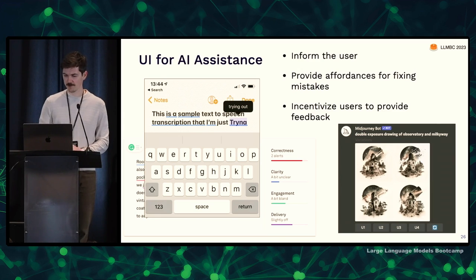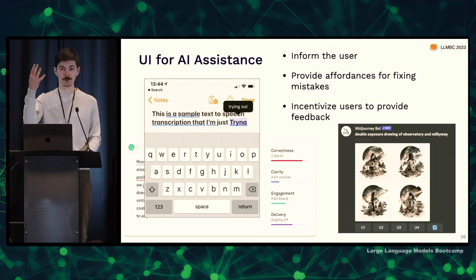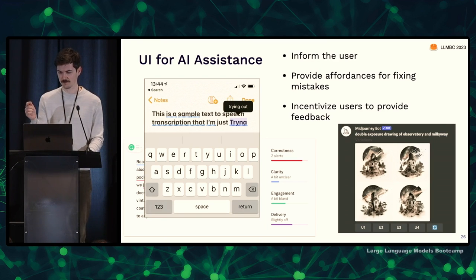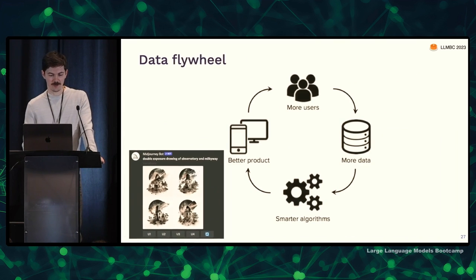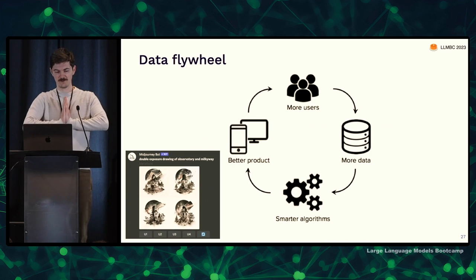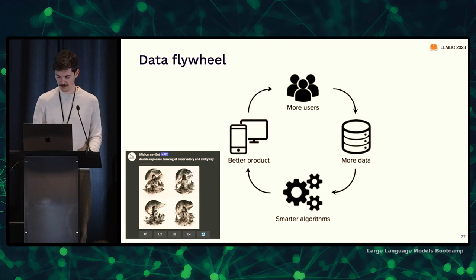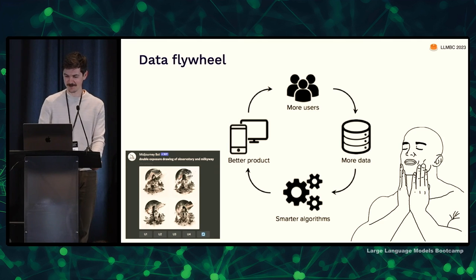Lastly, incentivize the user to provide feedback. Midjourney is a great example of this pattern. When you request something, it gives you four choices of generated images, and you actually can't download one until you click the button for the one you want. Obviously when you click to download or upsample or see variations, that's very strong signal to Midjourney that that was the image you liked best. This gets the data flywheel going — if users are providing data, you can use it to build a better product, attract more users, and it feeds back. Midjourney is very popular now because of this.